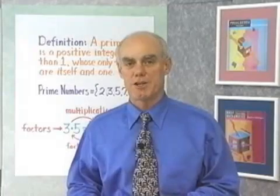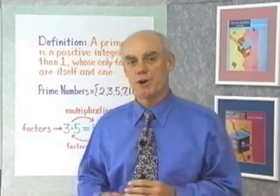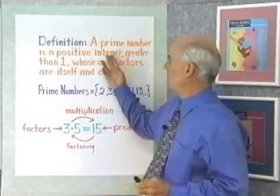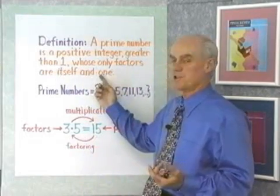Next, we want to look at reducing fractions to lowest terms, and in order to do that, we need a definition for what are called prime numbers. A prime number is a positive integer greater than 1, whose only factors are itself and 1.